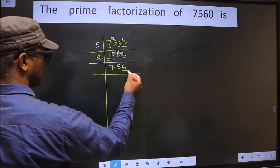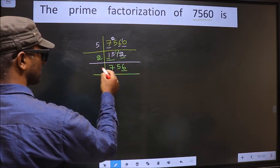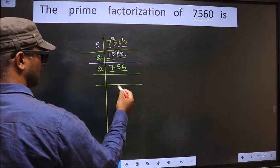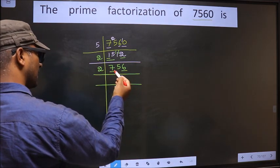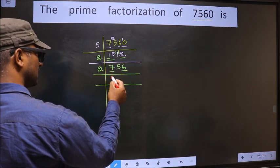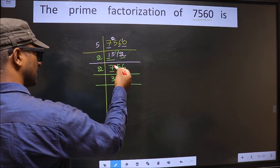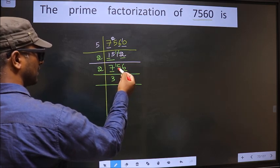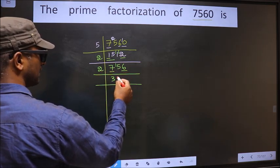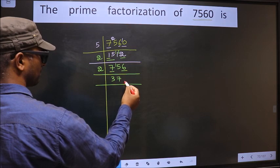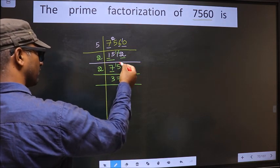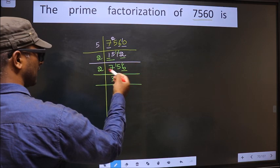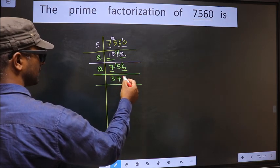For this number, the last digit is 6, so we take 2 here. The first number is 7 — a number close to 7 in the 2 table is 2 threes 6. 7 minus 6 is 1, carried forward making it 15. A number close to 15 in the 2 table is 2 sevens 14. 15 minus 14 is 1, carried forward making it 16. When do we get 16 in the 2 table? 2 eights 16.